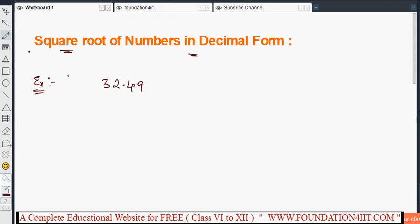Take the pairs from the right side: 49 and 32. For this 32, the perfect square which is nearest is 5×5. 5×5 is 25, because 6×6 is 36, which is more than that. So 5×5 is 25. If you subtract, you get 7.